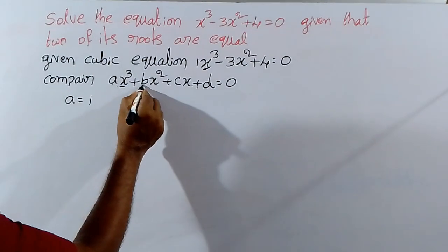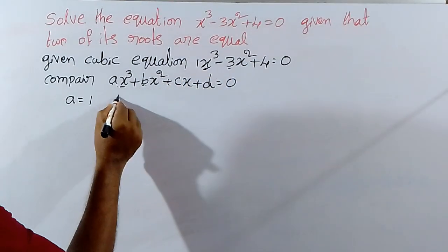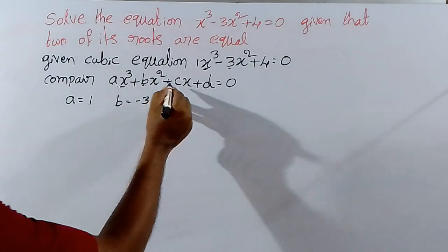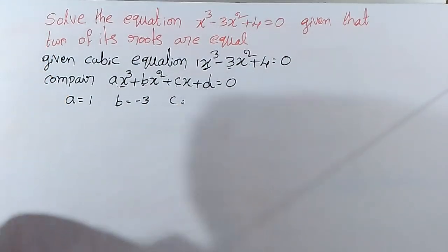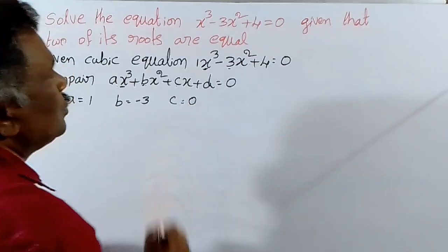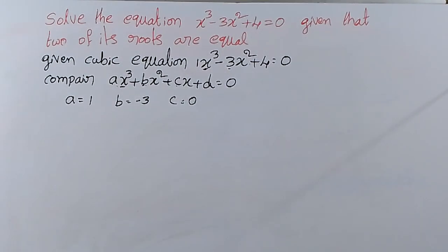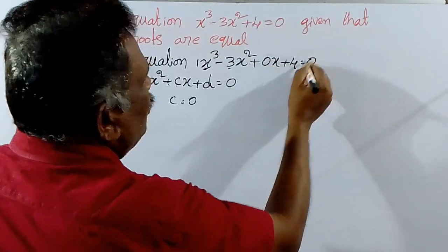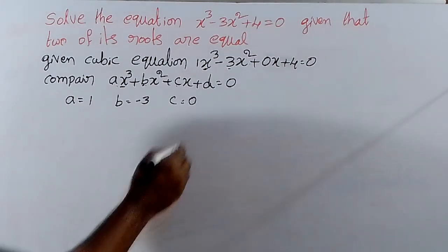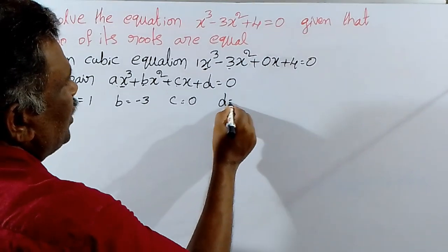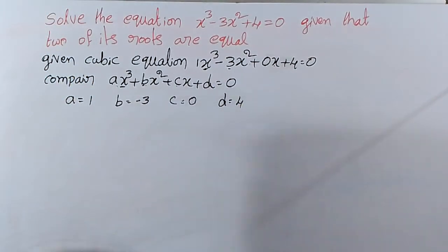Next, x square coefficient: here B, and here minus 3, so B equal to minus 3. And x coefficient: here C, but there is no x term, so C equal to 0. And D means constant term — here constant term is 4, so D equal to 4.